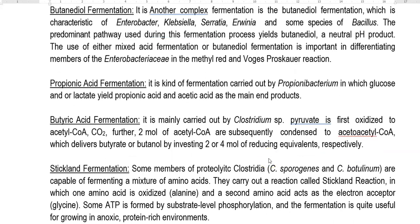The next one is propionic acid fermentation, carried out by Propionibacterium, in which glucose and/or lactate are metabolized to yield propionic acid and acetic acid as main end products. Next is butyric acid fermentation, carried out by Clostridium species. Here, pyruvate is first oxidized to acetyl-CoA and carbon dioxide, and further, two moles of acetyl-CoA are condensed to form acetoacetyl-CoA, which delivers butyrate or butanol by investing 2 to 4 moles of reducing equivalents to produce butyric acid.